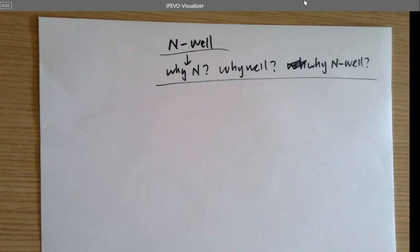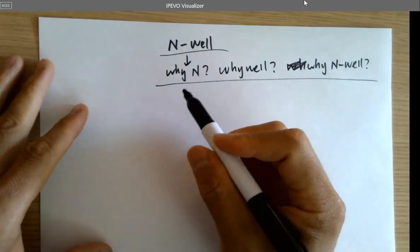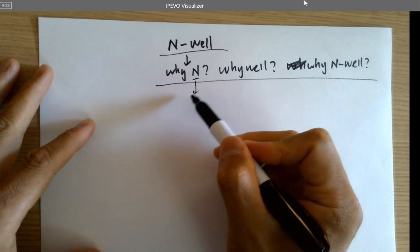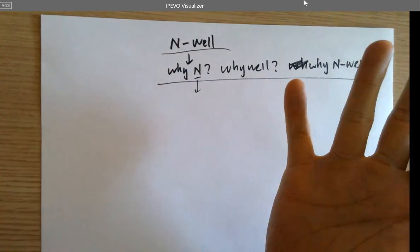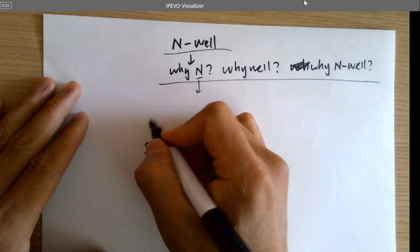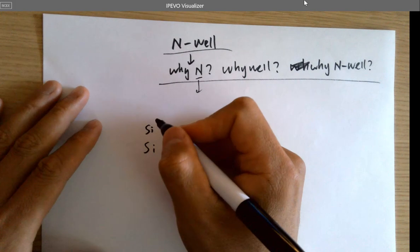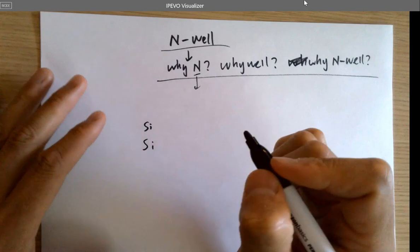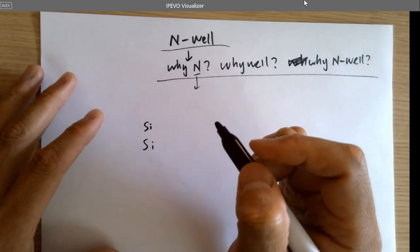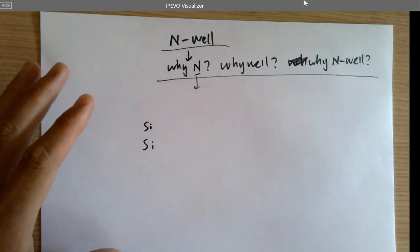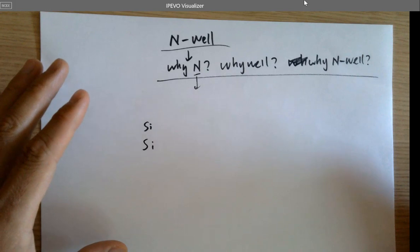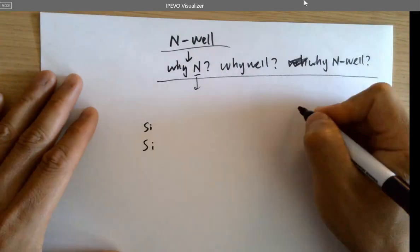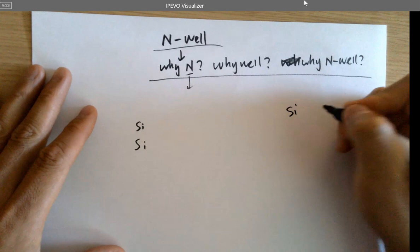Before we talk about N-well, it mostly represents the letter N for negative. Silicon — you know that all chips are built on silicon wafers. How many protons in silicon? How many of you have learned chemistry? Do you know protons? Silicon has how many protons? 14.